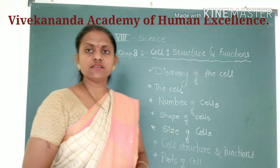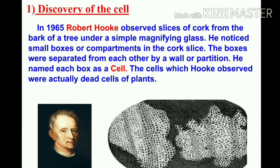Let's start with the first point: discovery of the cell. In 1665, Robert Hooke observed a slice of cork from the bark of a tree under a simple magnifying glass. At that time, the microscope was not yet developed, so he used whatever magnifying glasses were available. He observed the cork and found boxes separated from each other by a wall or partition. He named each box a 'cell.'